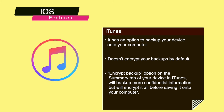Here are some other iOS features you should think about using if you are dealing with private data. iTunes has an option to backup your device onto your computer. iTunes doesn't encrypt your backups by default. If you choose the encrypt backup option on the summary tab of your device in iTunes, iTunes will backup more confidential information such as Wi-Fi passwords and email passwords, but will encrypt it all before saving it onto your computer. Be sure to keep the password you use here safe. Restoring from backups is a rare event but extra painful if you cannot remember the password to unlock the backup in an emergency.